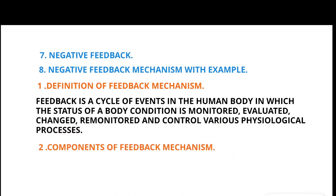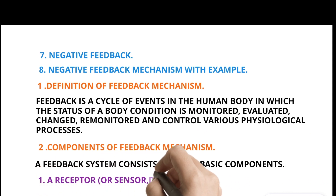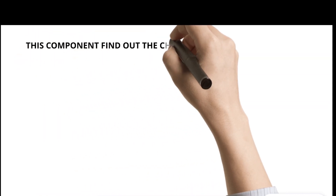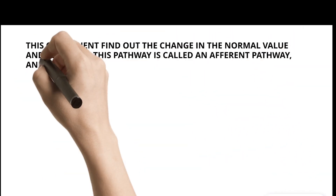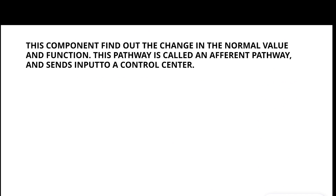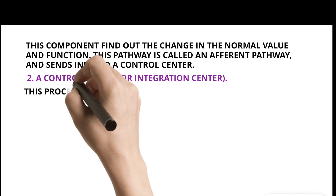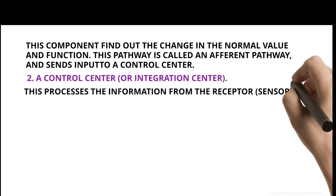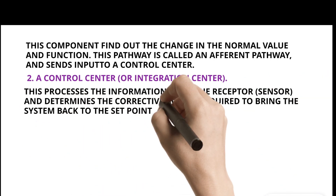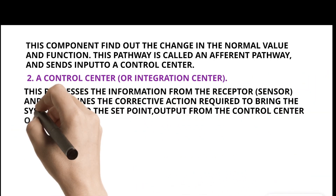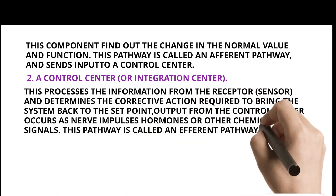Components of Feedback Mechanism: A feedback system consists of three basic components. First, a receptor or sensor detector. This component finds out the change in the normal value and function. This pathway is called an afferent pathway and sends input to a control center. Second, a control center or integration center. This processes the information from the receptor and sensor and determines the corrective action required to bring the system back to the set point.